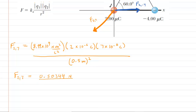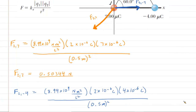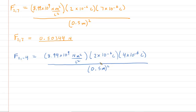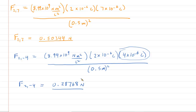Now let's calculate the other force, F2 negative four. We plug into the equation with the same constant and the charges — even though one charge is negative, we use the absolute value and plug it in as a positive number. The distance is again half a meter. When we calculate this force, we get 0.28768 Newtons. Those are the two forces, but we still have to be careful because they are acting in different directions, so we need to find the components.